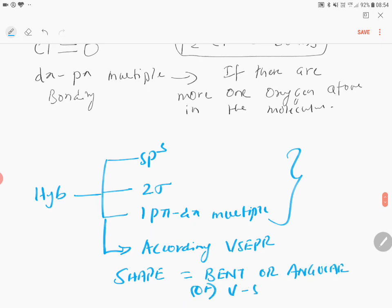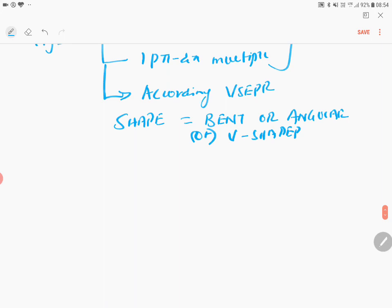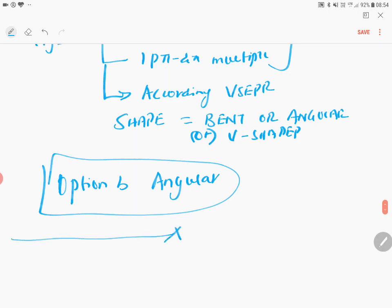Or V-shaped, all the things are the same. So if you see now the question in the option, option B, that is angular, is the correct option. So application of VSEPR is very important, prediction of the hybridization.